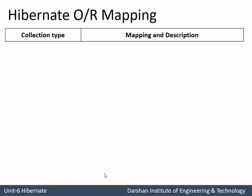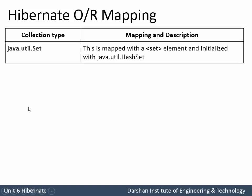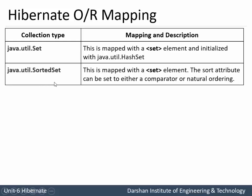There are certain types of collections. For example, if your collection type is java.util.Set, then in Hibernate this is mapped with a set element and initialized with java.util.HashSet. If it is SortedSet, then it is also mapped with the set element. The sort attribute can be set to either a comparator or in the form of natural ordering.